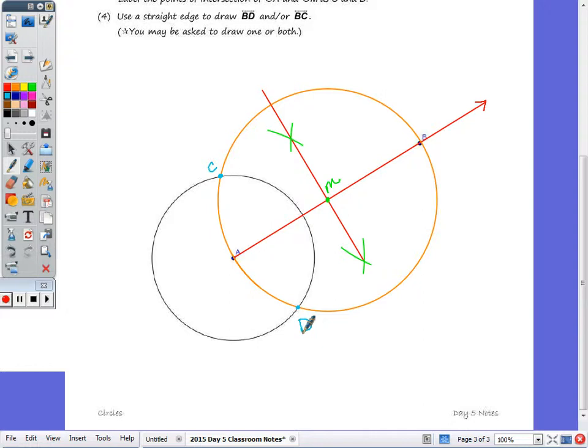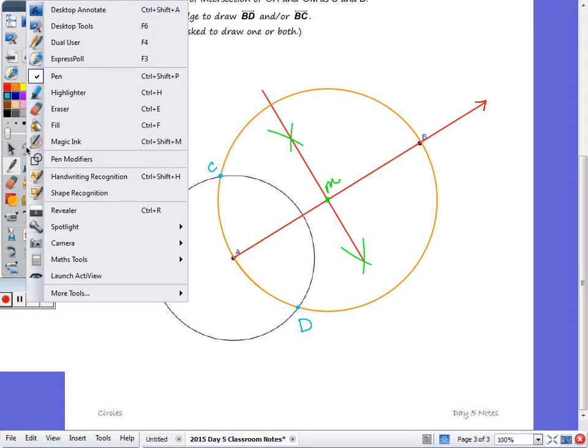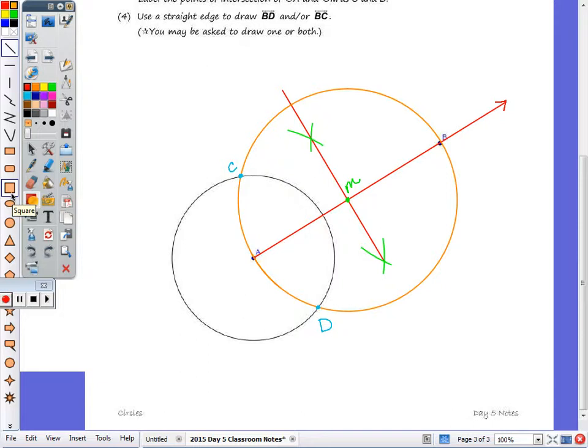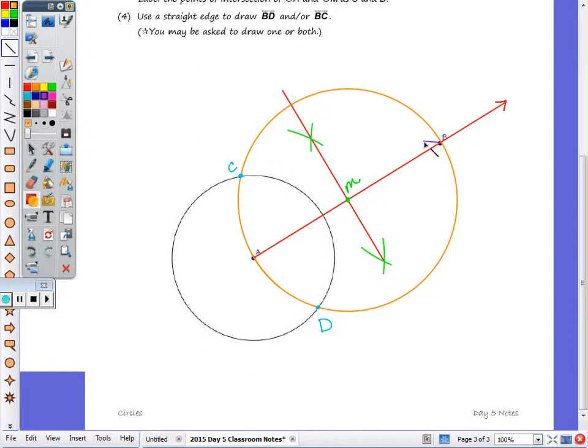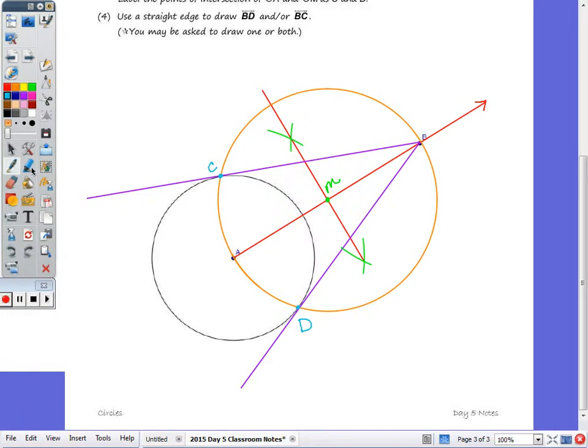And what we're going to do now is use your straight edge to draw BD and or BC. Because we have two tangent lines within this picture. So let's do those in purple. So B to C, so that intersects our circle once. Or B to D, that intersects our circle once. So in purple are the tangent lines. Draw one or the other. So BC and BD are tangent lines to circle A.